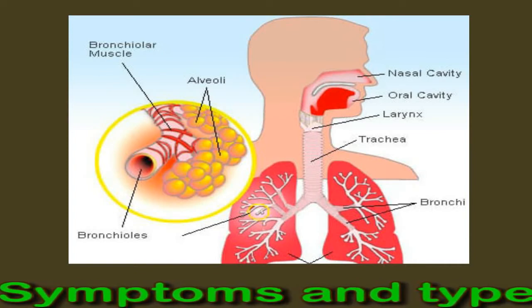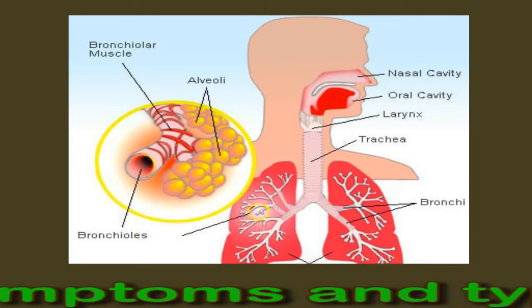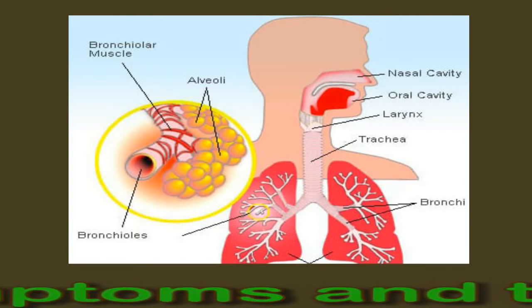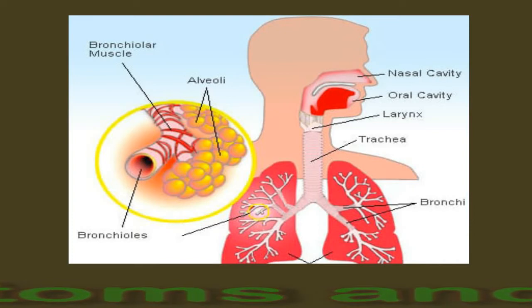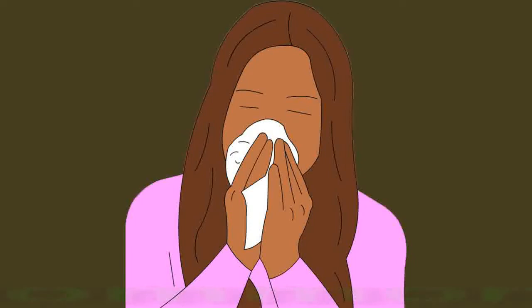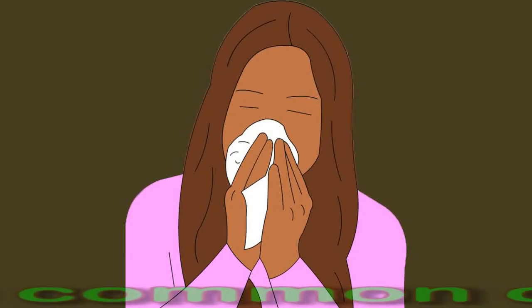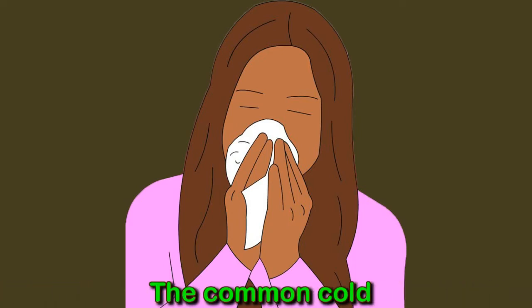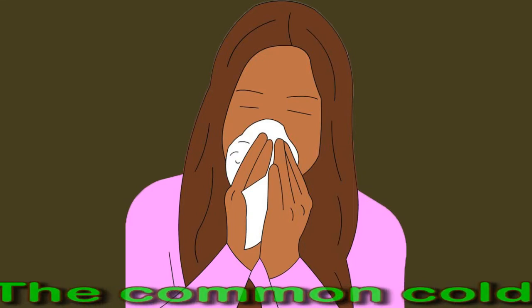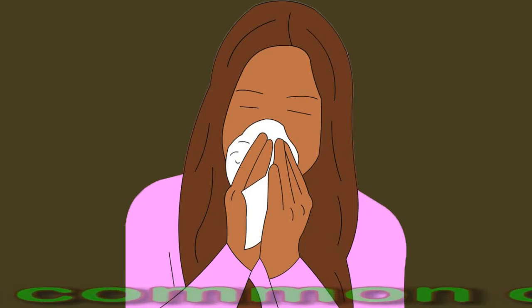Several types of upper respiratory infection exist, and doctors classify them according to the part of the respiratory tract they mainly affect. The common cold: many viruses can cause a cold. Symptoms may include a blocked or runny nose, a sore throat, headaches, muscle aches, coughing and sneezing, changes in taste and smell, a fever, and pressure in the ears and face. Symptoms usually go away with home treatment after 10 to 14 days.